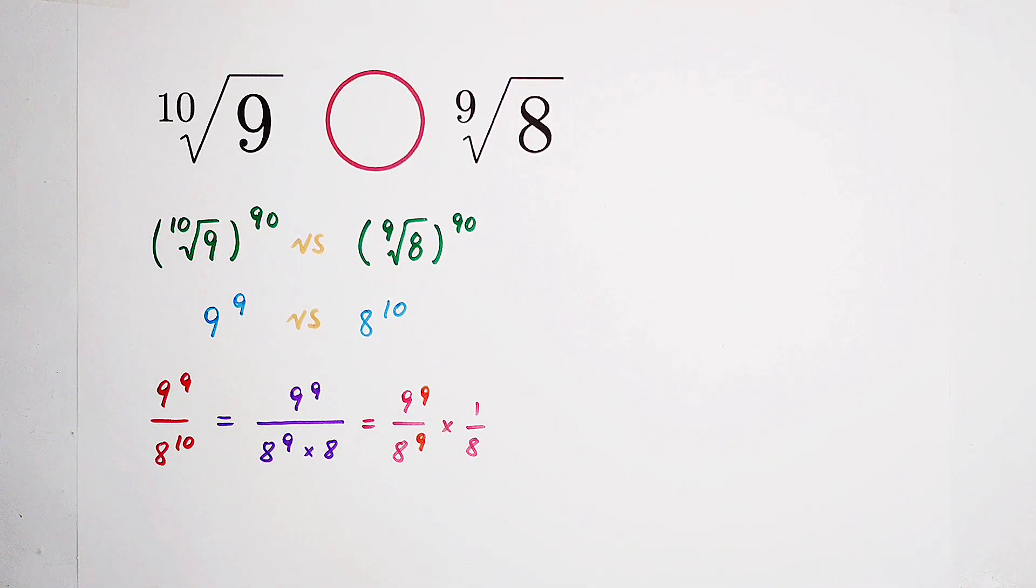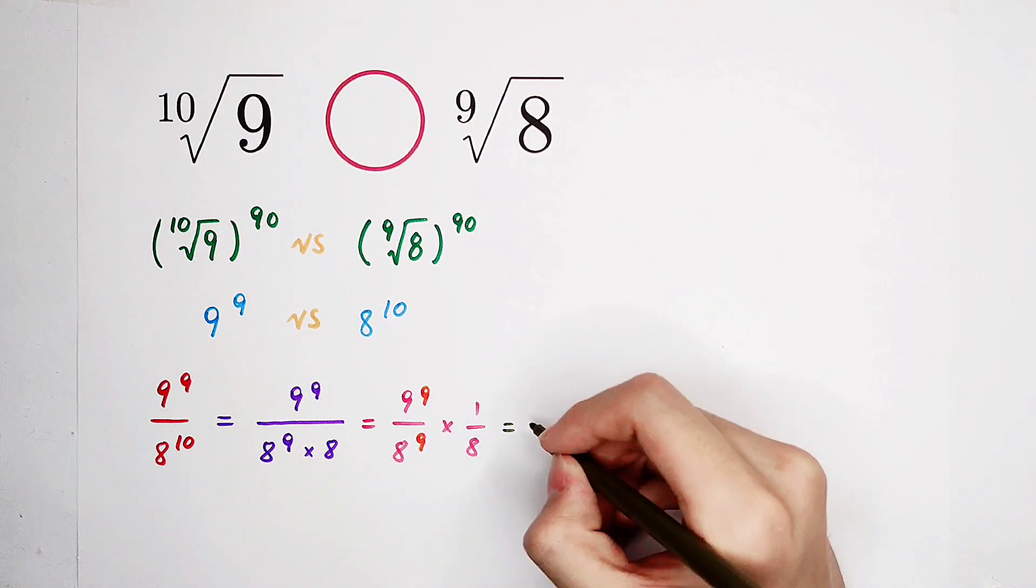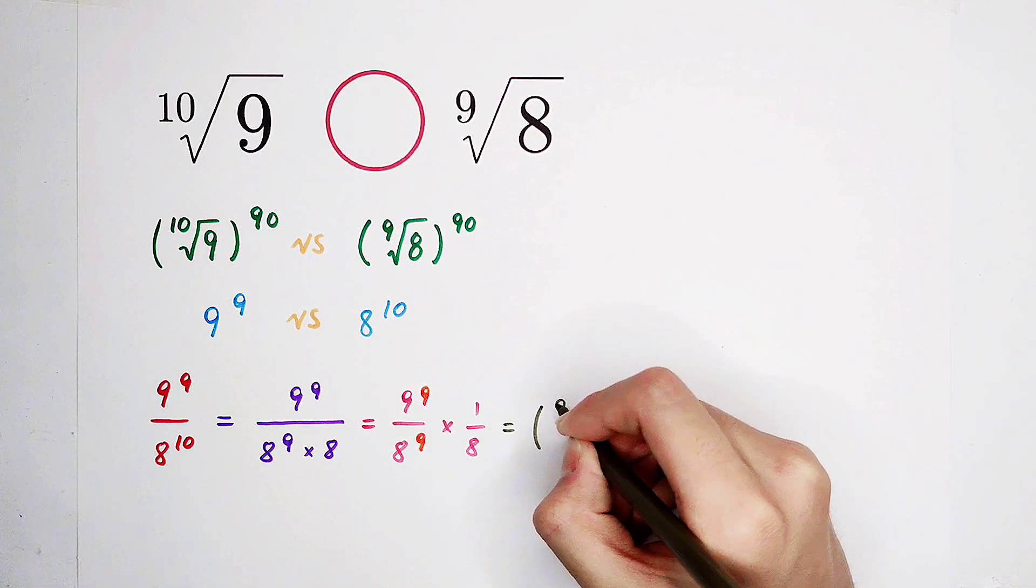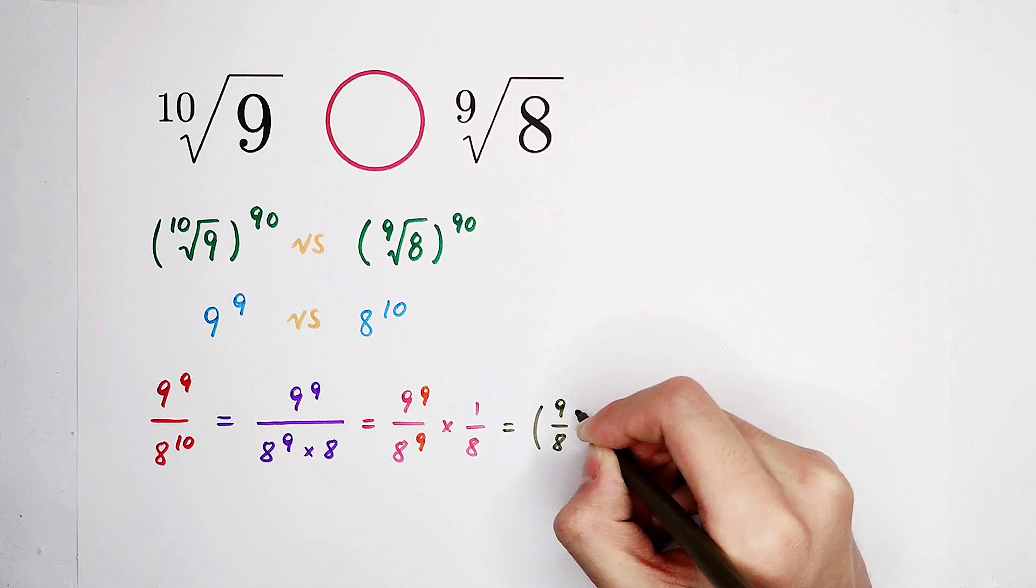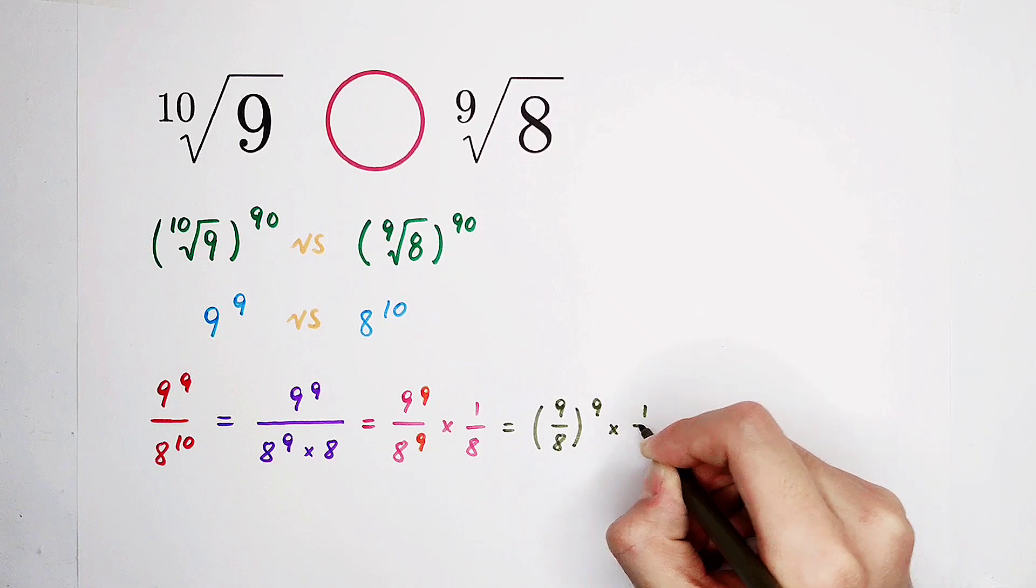Write it as 1 plus 1 over 8. So, we have 9 over 8 to the power of 9, then times 1 over 8.